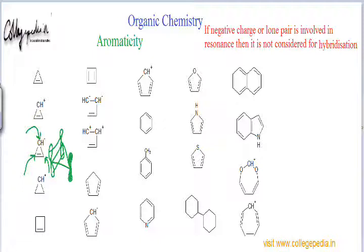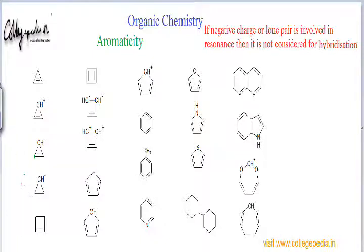Looking at the next intermediate, the first condition is planarity, and this molecule is not planar at all because there are two atoms which are sp3 hybridized. If we look at these two lower atoms, the other two are sp2 hybridized, but since two are sp3 hybridized, there is no question of aromaticity or anti-aromaticity because they are not planar at all.